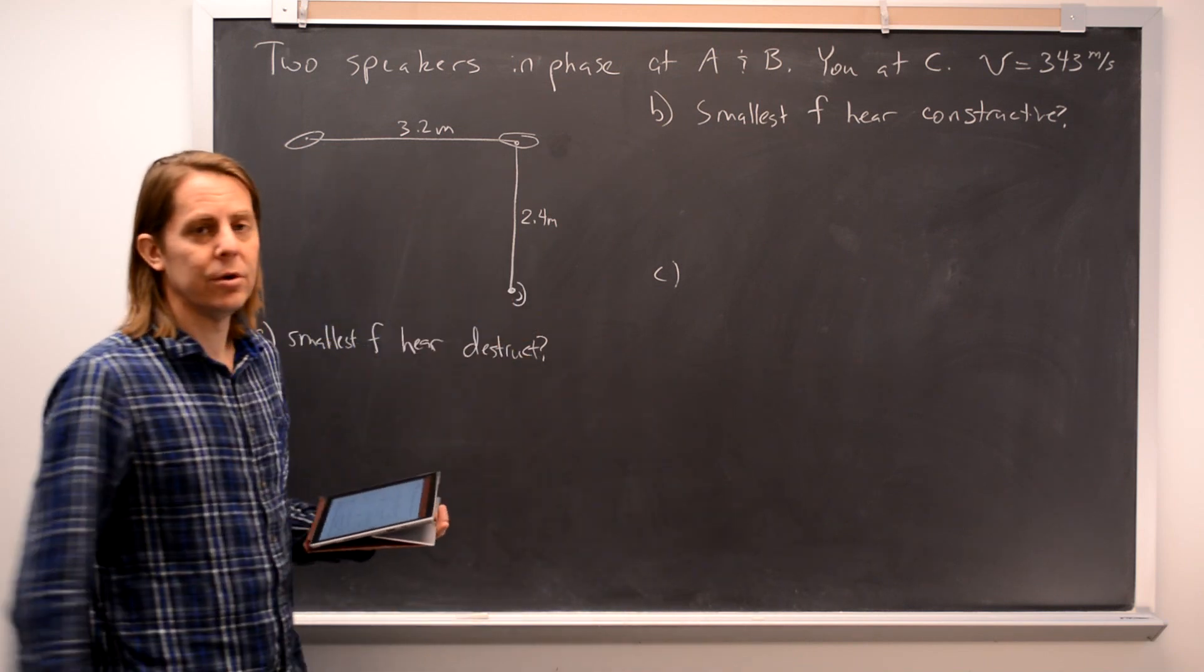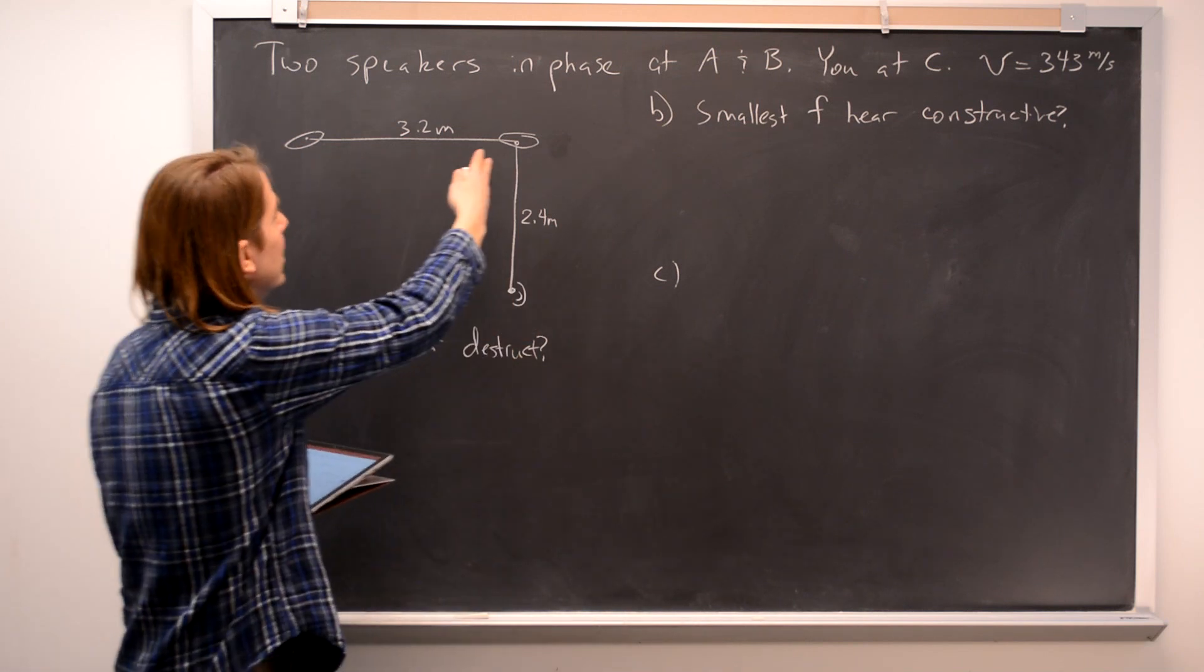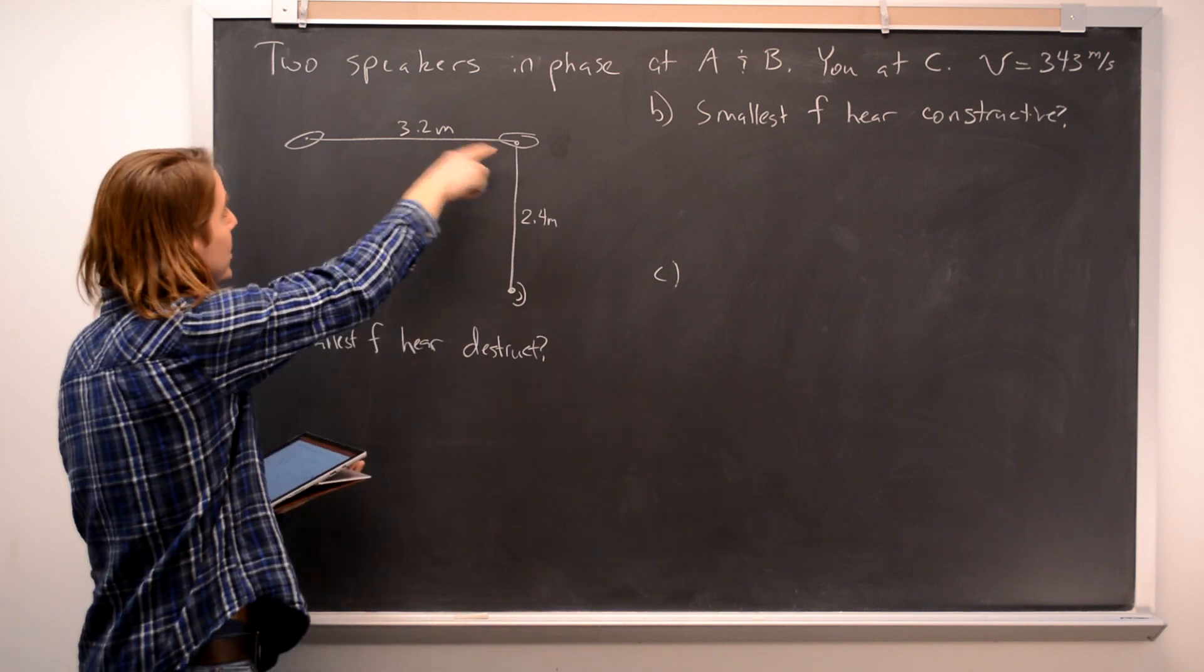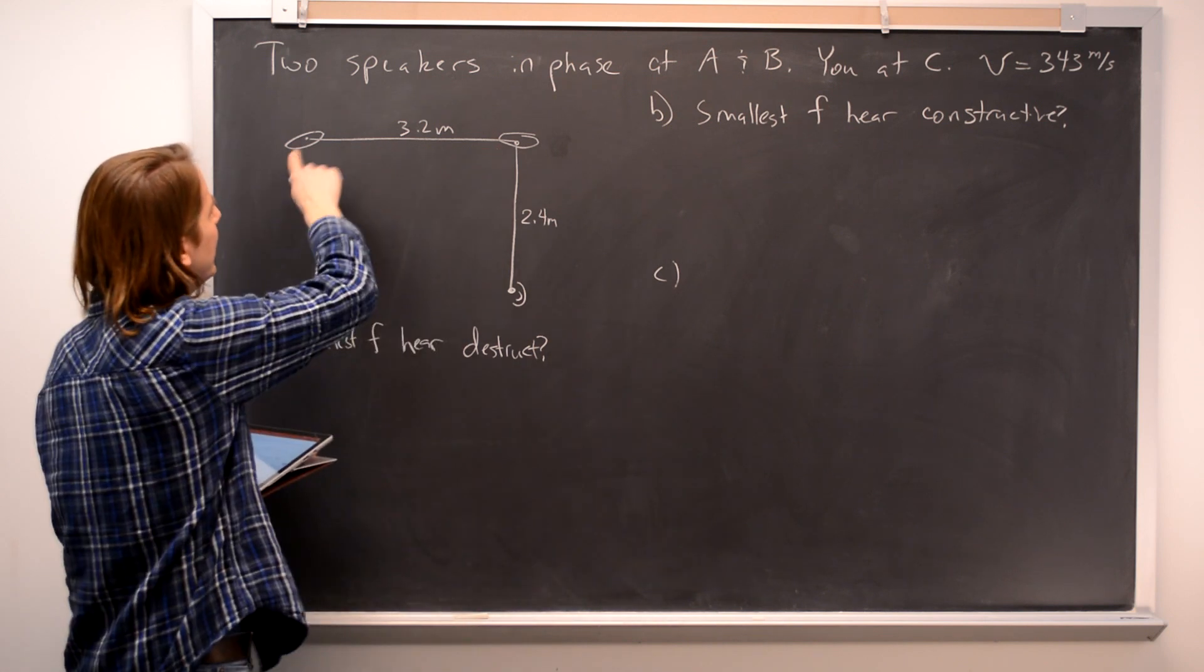Here's one of these fun two-speaker, two-dimensional problems, but at least they're in phase. So two speakers along the line, separated by 3.2 meters, they're at A and B.